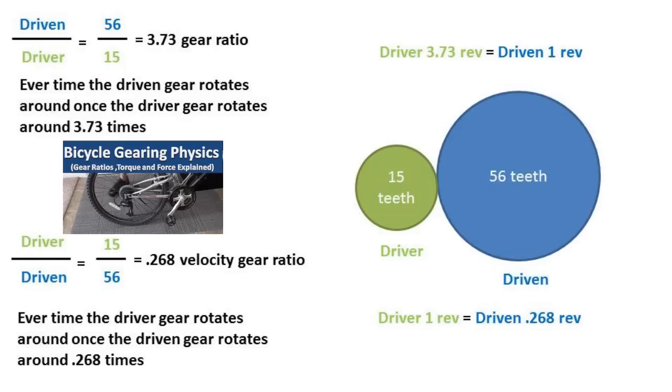In this example, every time the driver gear rotates around once, the driven gear rotates around 0.268 times. We get this by taking the number of driver gear teeth and dividing by the number of driven gear teeth.